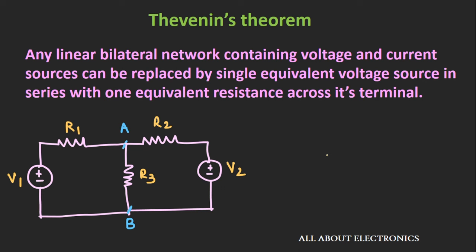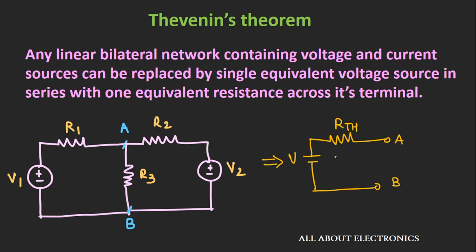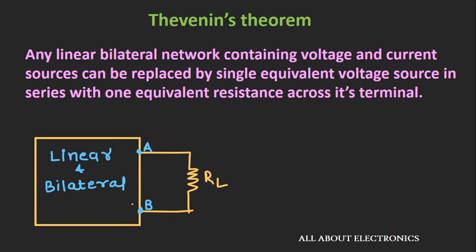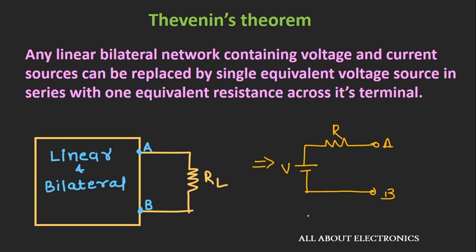The voltage and current sources could be dependent or independent sources. It doesn't matter how complex the network is — you can apply Thevenin's theorem. If you don't know about linear and bilateral networks, you can check my video on classification of electrical networks. The link is given in the description below.